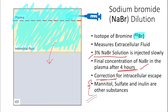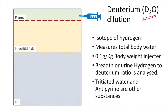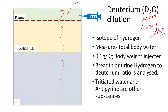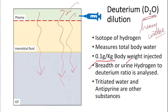Deuterium oxide is an isotope of hydrogen; combined with oxygen it is called heavy water. When injected, it behaves like water and distributes equally into all three compartments — making it suitable for total body water estimation. We inject around 0.1 g/kg of body weight and measure the final concentration using breath or urine samples by measuring the hydrogen-to-deuterium ratio. Deuterium is not radioactive, so it is safe to use in small quantities.